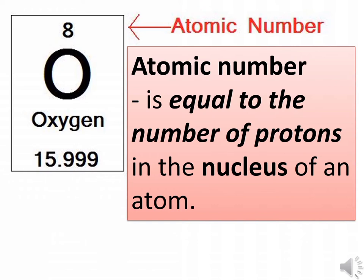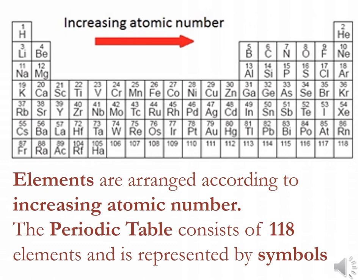Nowadays, elements are arranged according to increasing atomic number. The periodic table consists of 118 elements and is represented by symbols.